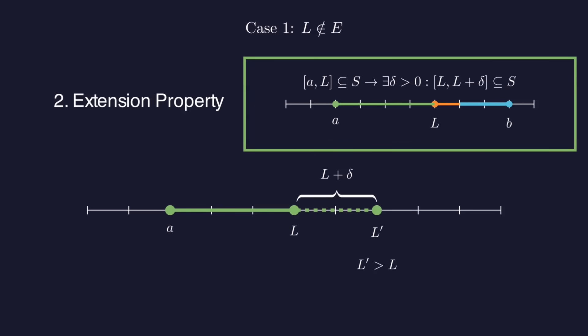But that means that L plus delta is also a lower bound for the bad points, so L wasn't the greatest lower bound of E after all. So that gives us a contradiction and we can move on to the other case.